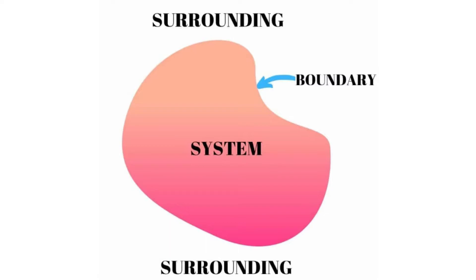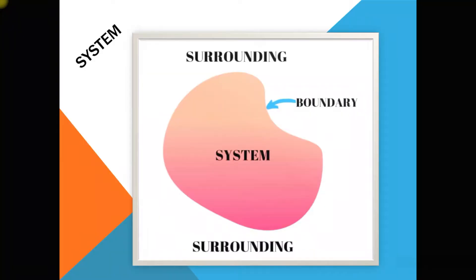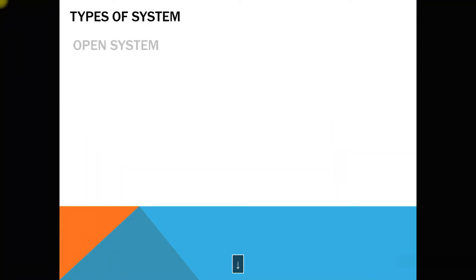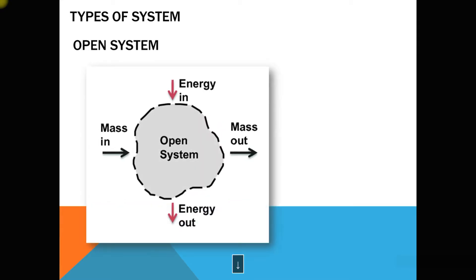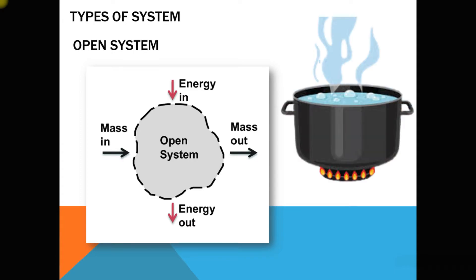Now we will discuss types of system. The first one is the open system. In an open system there is a transfer of both mass and energy across the boundary. Let us take the example of an open vessel that is heated by an external source such as a burner.